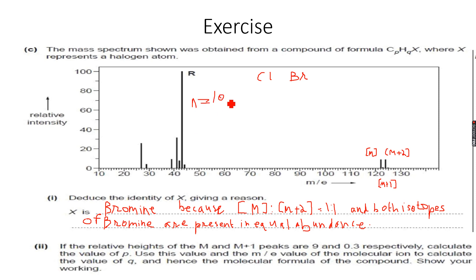100 over 1.1 into 0.3, which is the M+1, over 9, which is the M peak.